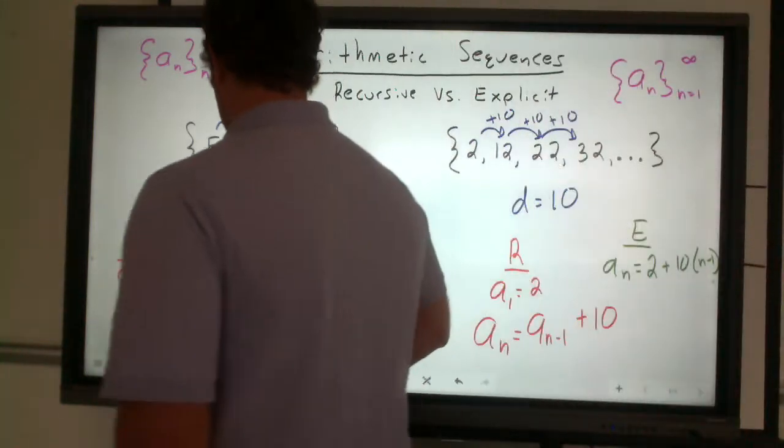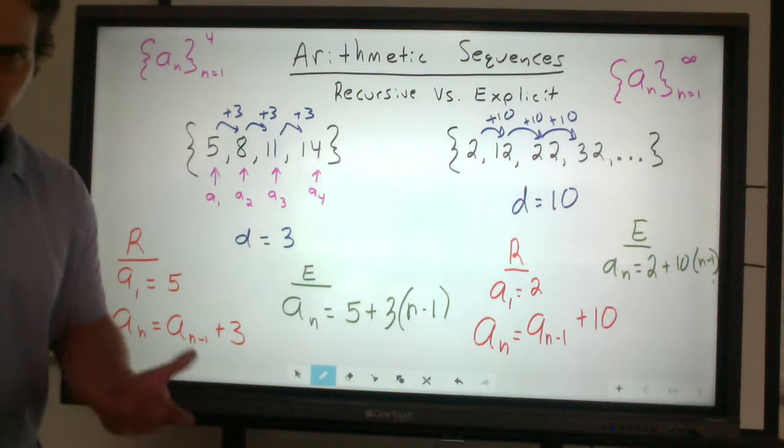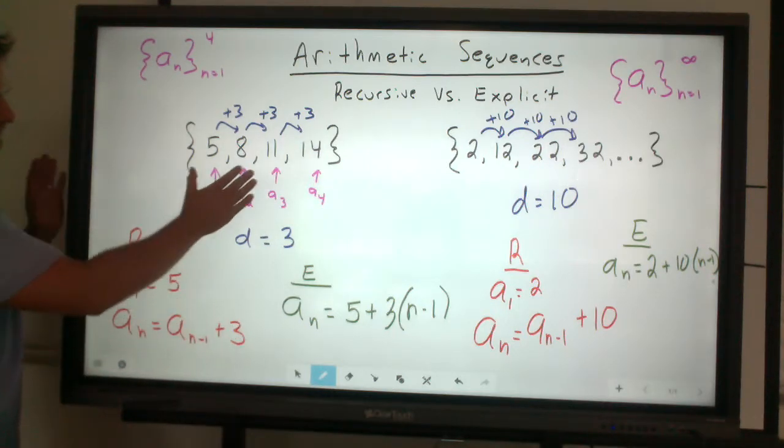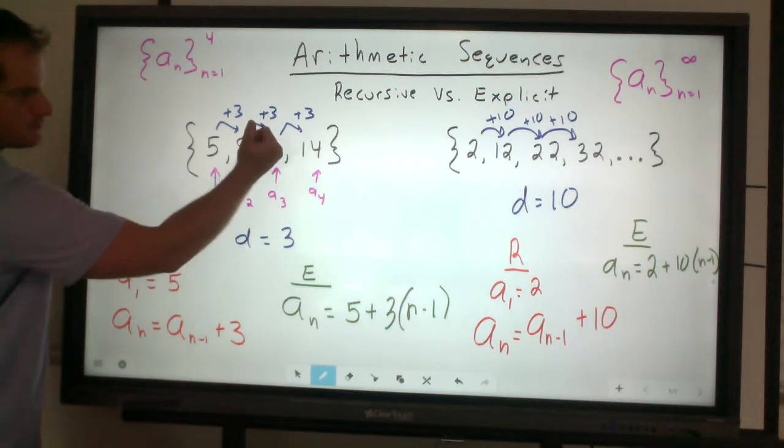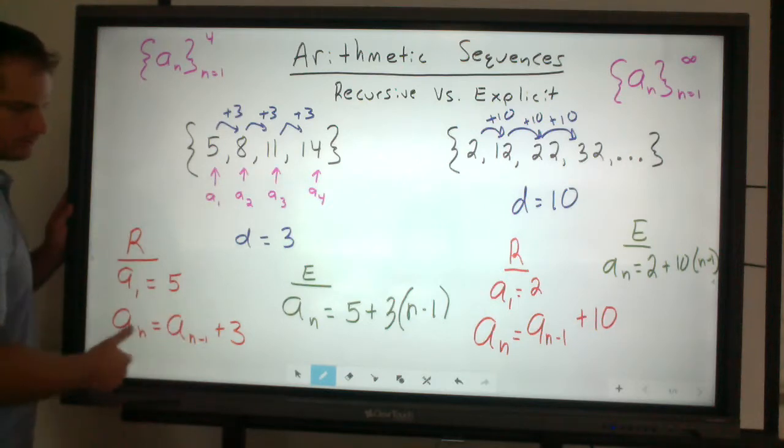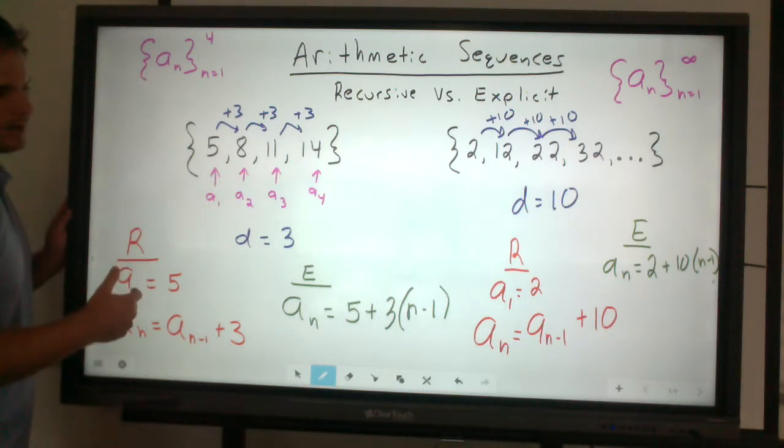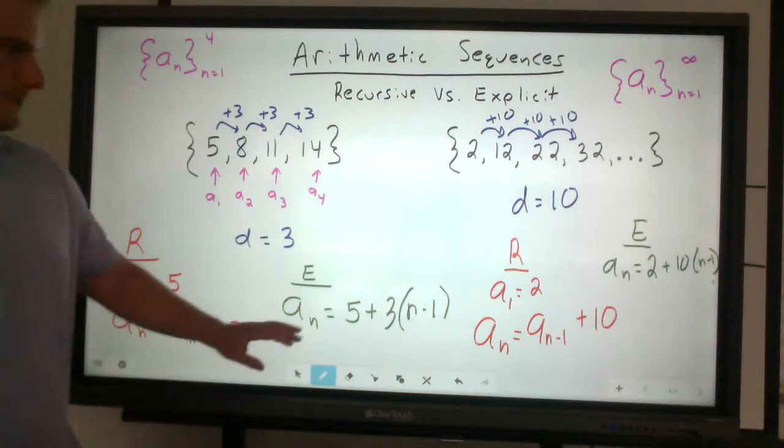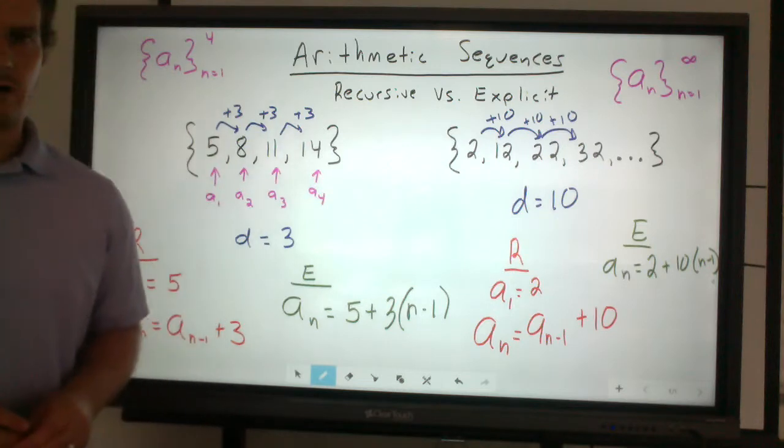Now, using recursive rules, or using explicit rules, or we'll call them formulas kind of interchangeably, this is really nice to use if you just kind of have a finite set. You can kind of identify certain patterns. Maybe there's one value that happens to be missing. The recursive rule is kind of a nice way to use or find those values in a set that you know all the terms, or you can see them all in that finite set.